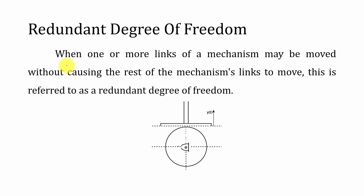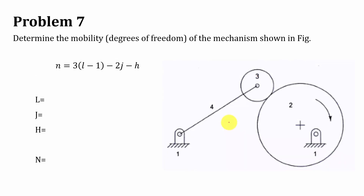Before the next problem, let us understand redundant degrees of freedom. This occurs when one or more links of a mechanism can be moved without causing the rest of the mechanism's links to move. For example, a circular cam pivoted at its center point — if the cam rotates, this rotation will never affect the position of the follower. In that case, this is considered a redundant degree of freedom, FR = 1.